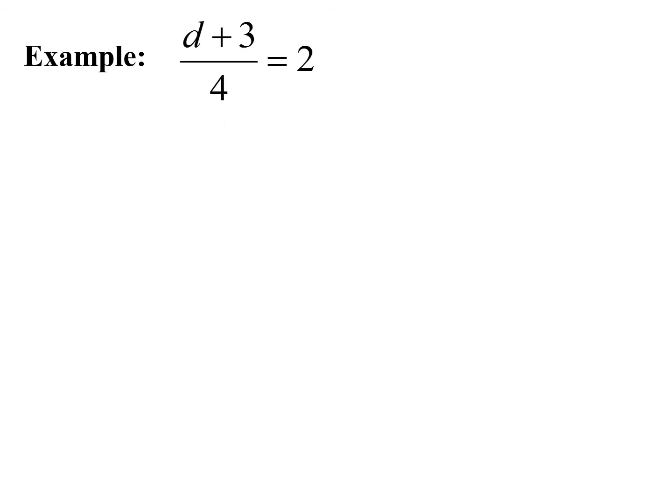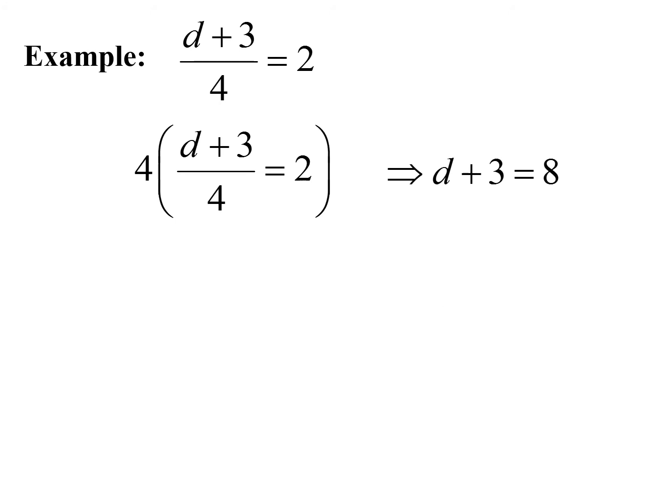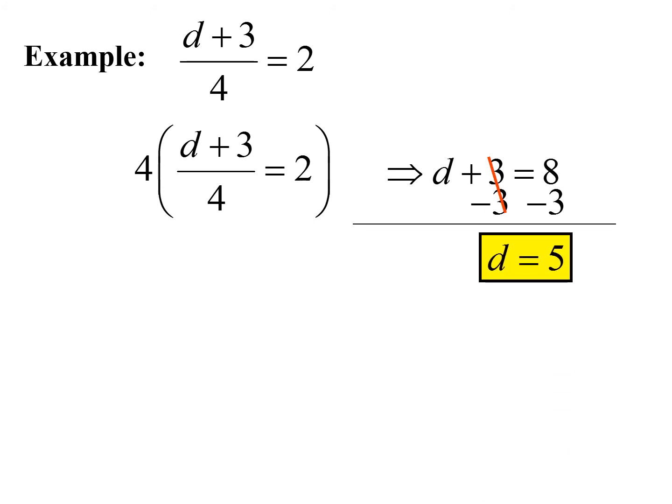Here we have another example with a fraction: (d plus 3) divided by 4 equals 2. My denominator is 4, so I multiply the entire equation by 4. Each term is multiplied by 4. On the left, multiplying eliminates the denominator, giving d plus 3. On the right, 4 times 2 equals 8. So we have d plus 3 equals 8. Subtract 3 from both sides, and d is equal to 5.